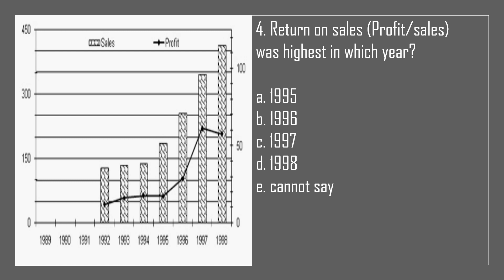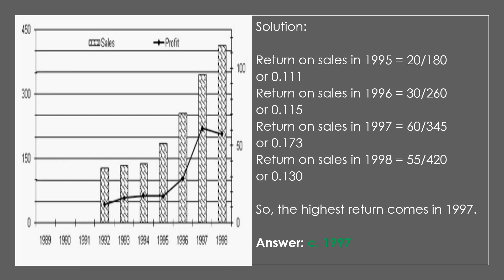Question 4. Return on sales was highest in which year? A. 1995. B. 1996. C. 1997. D. 1998. E. Cannot say. The answer is C, 1997. Solution: Return on sales in 1995 = 20/180 = 0.111; in 1996 = 30/260 = 0.115; in 1997 = 60/345 = 0.173; in 1998 = 55/420 = 0.130. The highest return comes in 1997.